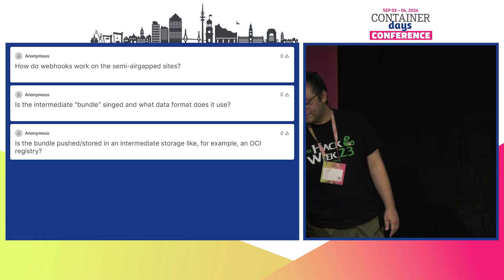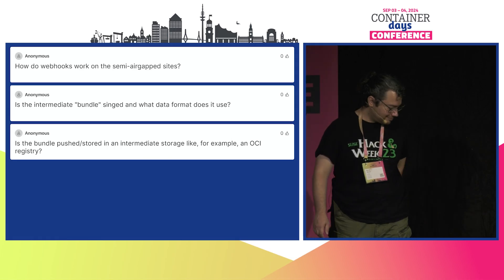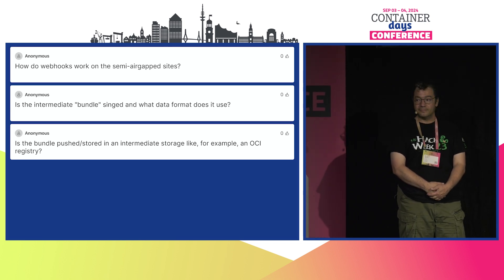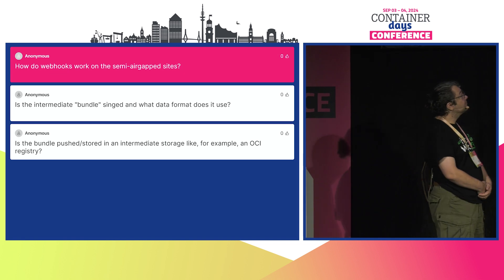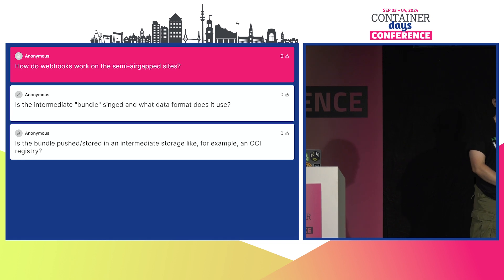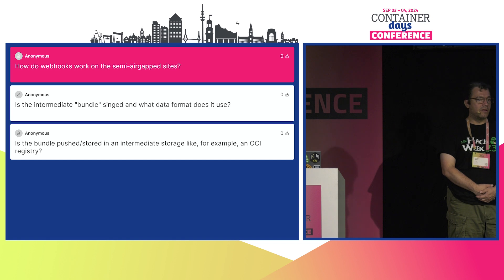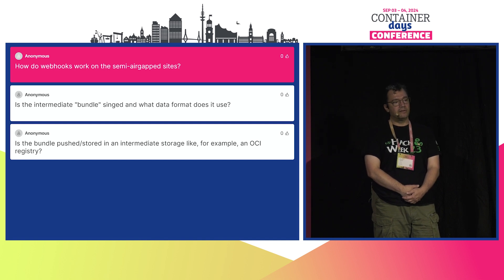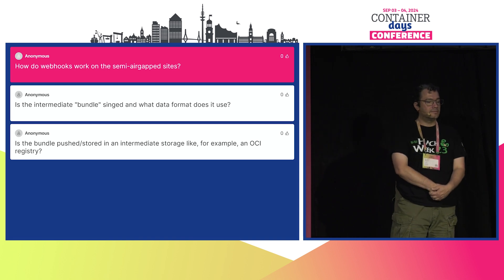We have questions from Slido. First: webhooks on air-gapped sites. Because we have the intermediate bundle format, the control plane is not air-gapped — it creates bundles. The agents connect back to the control plane and fetch bundles from there once they're online. So agents don't react directly to webhooks — they're isolated and only speak to the control plane.